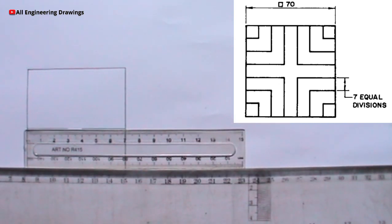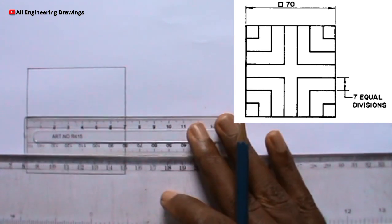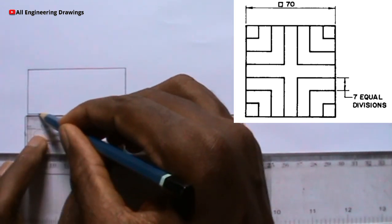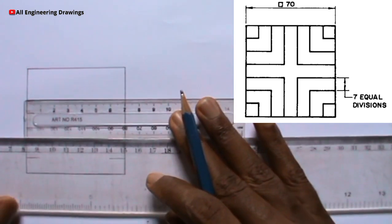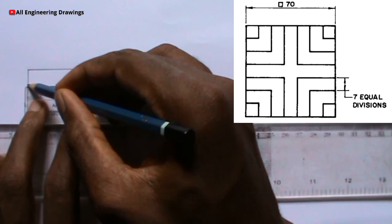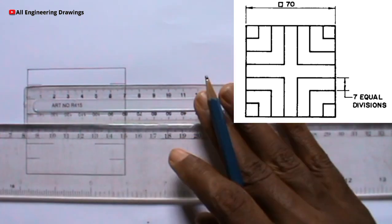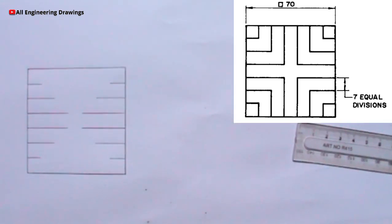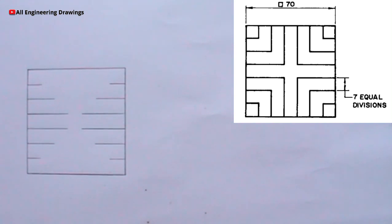So now we are at 30mm, we draw another 30mm, then we go to 20mm and 10mm. We are done with the horizontal lines.